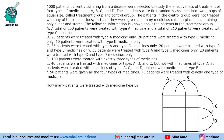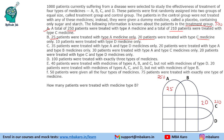Most of the values are already given, so we directly start putting them in. A total of 250 patients were treated with type A medicine and 210 patients with type C medicine — meaning the entire region within C is 210. 25 patients were treated with type A only, 20 with C only, and 10 with D only.